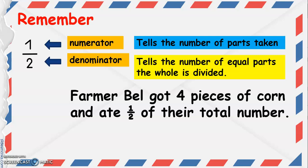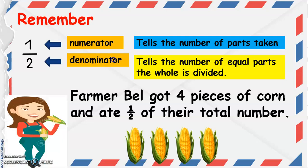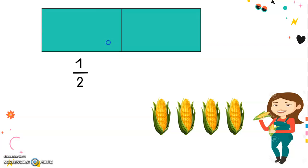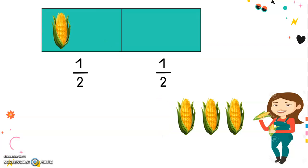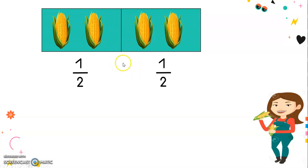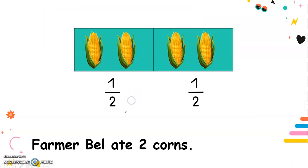Farmer Bell got four pieces of corn and ate one half of their total number. We're going to group these corns into two equal parts — one corn in this group, another corn in this group, another corn in this group, and a corn in this group. As you can see, this is one half of four, and this is also one half of four. So Farmer Bell ate two corns.